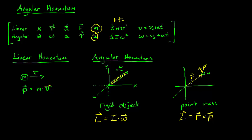If we cross two vectors in the XY plane, then according to the right-hand rule the resultant vector is perpendicular to them. Curling in the YX plane, the angular momentum vector is perpendicular and points along the Z axis. So the angular momentum is perpendicular — just like torque, the momentum of this rod would point in the Z direction.